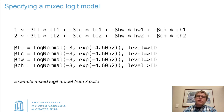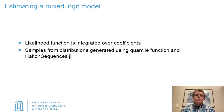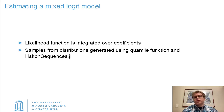I've defined the level of randomization on each of these variables to be at the level of ID. This is a panel data set where the ID identifies each respondent, so we're assuming that the random variation is between respondents rather than within a single respondent. To estimate a mixed logit model, you integrate the likelihood function over the coefficients. Since any distribution is allowed, there's no way to integrate that analytically in the general case, so simulated maximum likelihood is used. Samples from those distributions are generated using Halton sequences from HaltonSequences.jl, and then the quantile function converts those into being distributed as the chosen distribution.